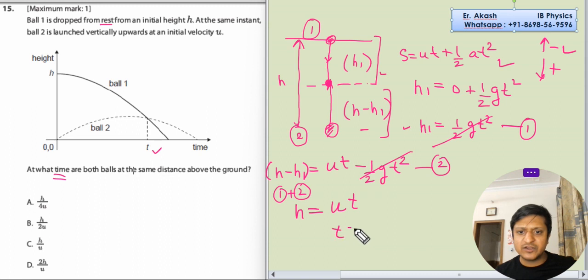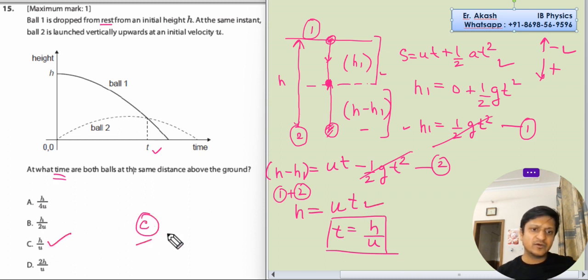So t equals h by u. So h by u is option C. Option C should be the right answer for this question.